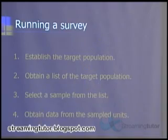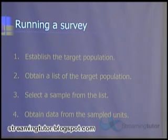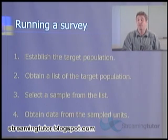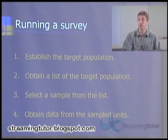Let's start off talking about surveys. In a survey, there are really four main steps. The first step is you've got to establish the target population — what's the group that you really want to learn about? Second, you need to make a list of all the people, all the units that are in that target population. Third, you actually take a sample of people from that list. And lastly, you go out and get the data. What we're going to focus on is that third step: how you select a sample.